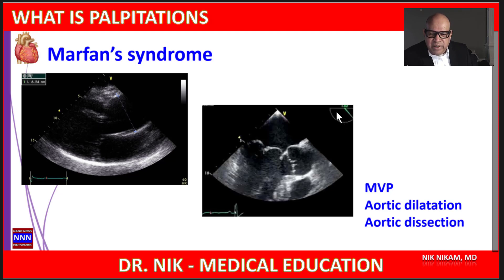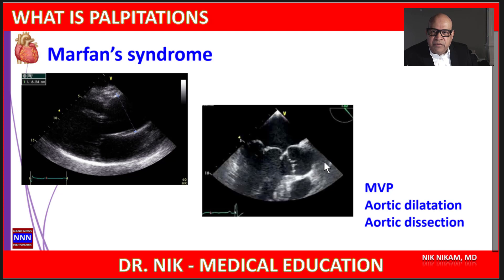We have aortic root dilatation along with mitral valve prolapse both in the same image. Marfan syndrome, as you know, is characterized by aortic root dilatation along with mitral valve prolapse. These patients are prone for aortic aneurysm and, more importantly, aortic dissection.